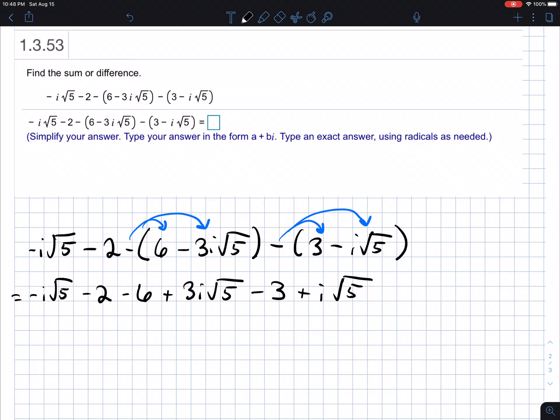So then what we want to do, we're going to combine like terms essentially. So we have this negative two, this six and this negative three. Those are a set of like terms. So negative two plus negative six is negative eight, plus negative three is negative eleven. So this is going to be negative eleven.